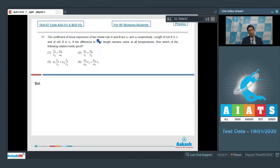Question 31 says the coefficient of linear expansion of two metal rods A and B are alpha 1 and alpha 2 respectively. The length of rod A is L1 and of rod B is L2. If the difference in length remains same at all temperatures, then which of the following relations holds good?